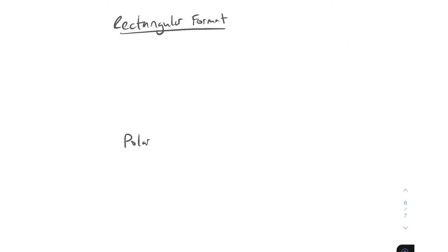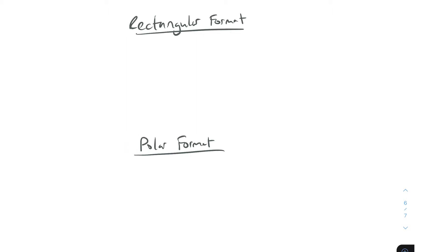So you've got rectangular format and you've got polar format — these are the two types of complex numbers. If you had a voltage A, expressing it in rectangular format would be x plus or minus jy. Expressing that same voltage A in polar format would be A equals z at an angle of beta.